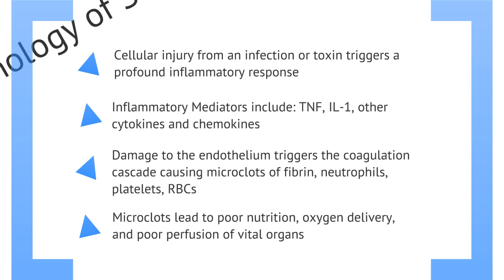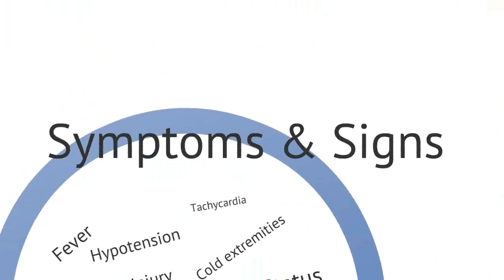Damage to the endothelium triggers the coagulation cascade, causing microclots of fibrin, neutrophils, platelets, and RBCs. The development of microclots can lead to poor nutrition, oxygen delivery, and poor perfusion to vital organs because of blockages in the vessels.